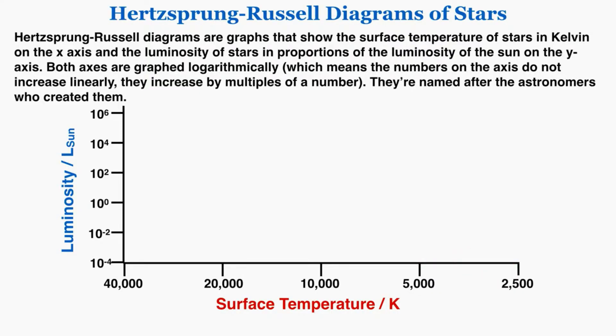The reason we graph HR diagrams this way is that this specific format allows us to see clear patterns emerging in the properties of stars. Just for context, this is the luminosity of the sun, so each notch on the y-axis is 10 to a certain power times that luminosity.